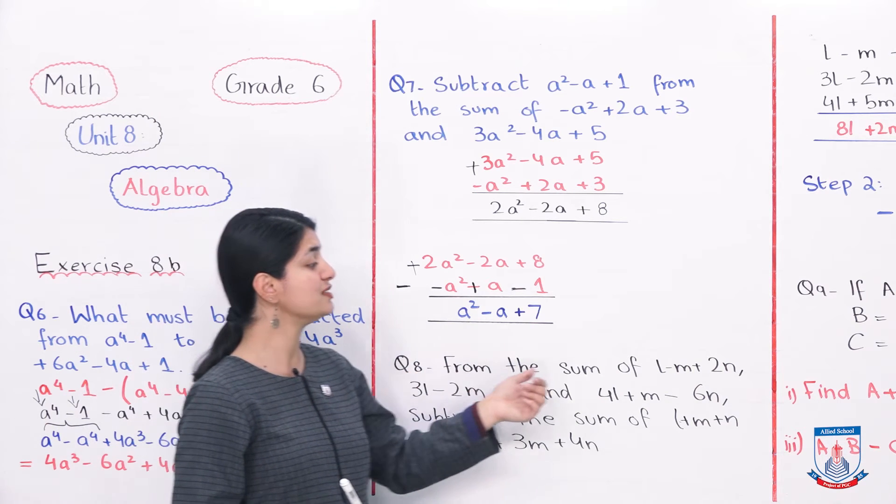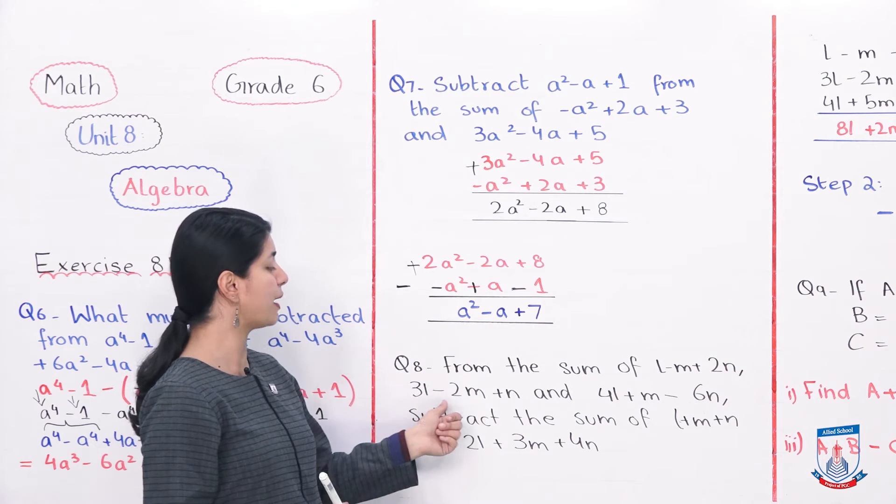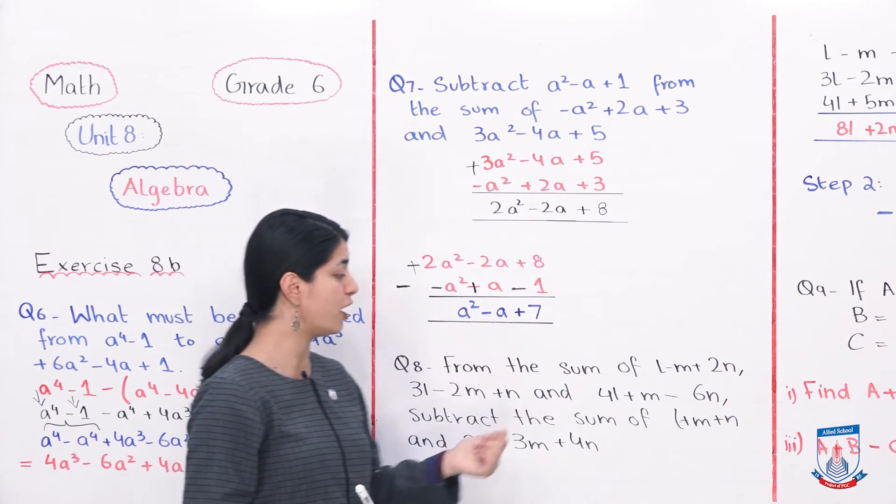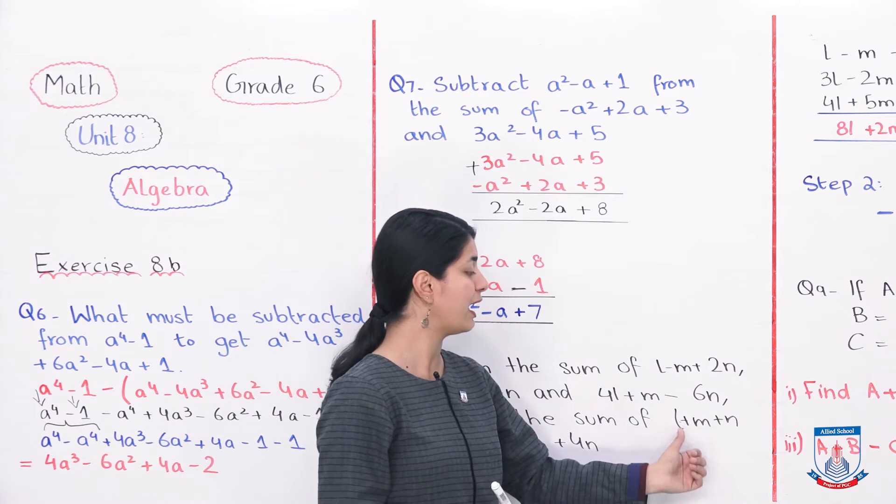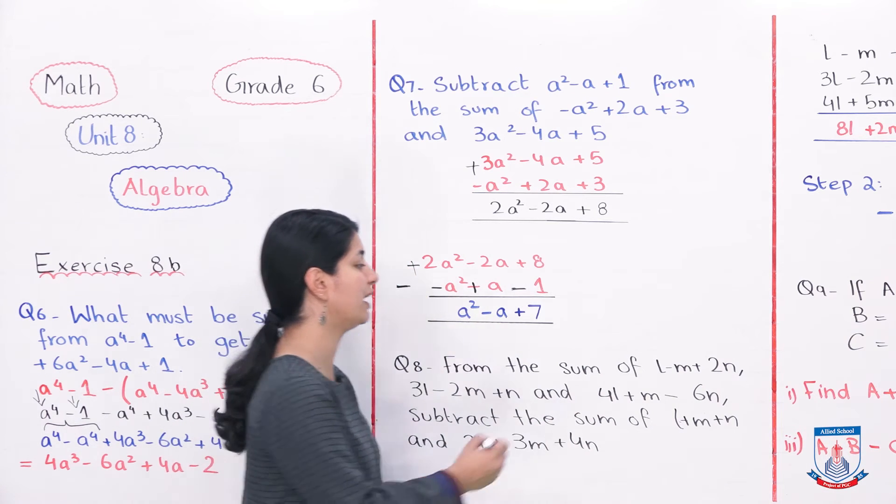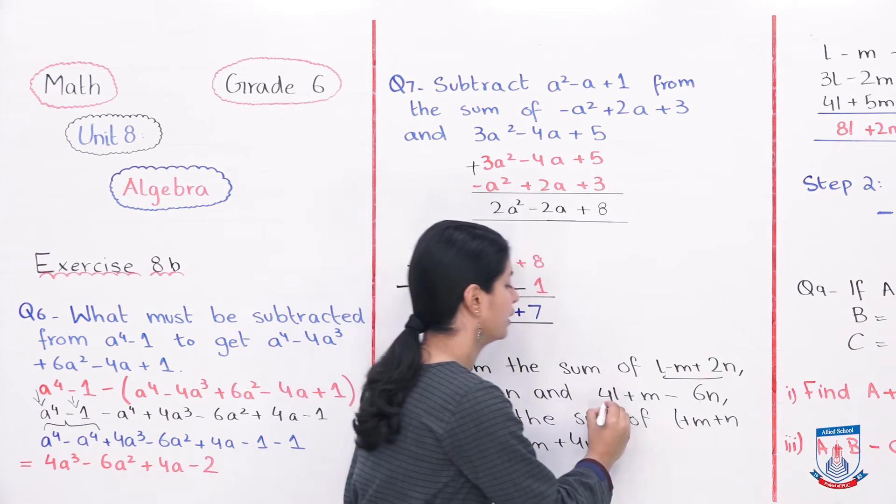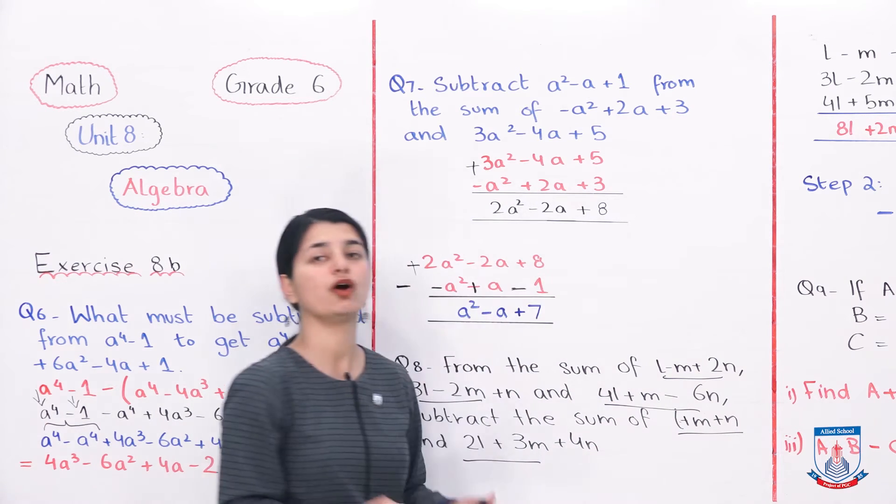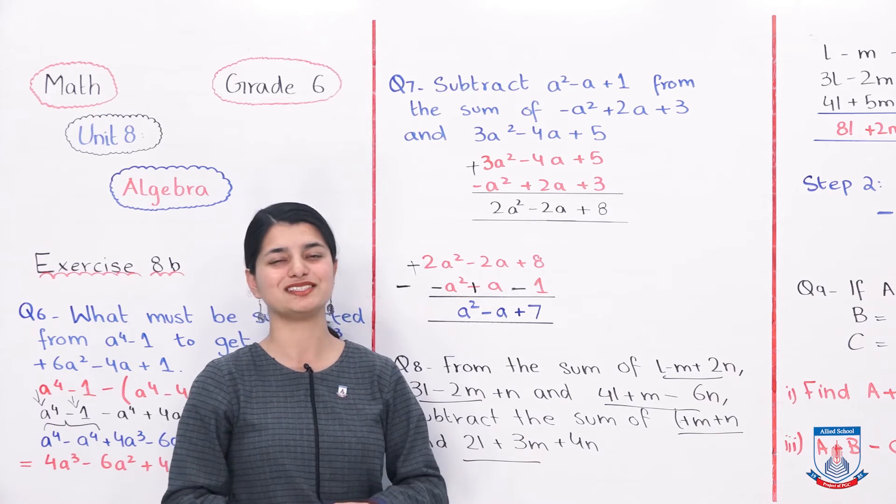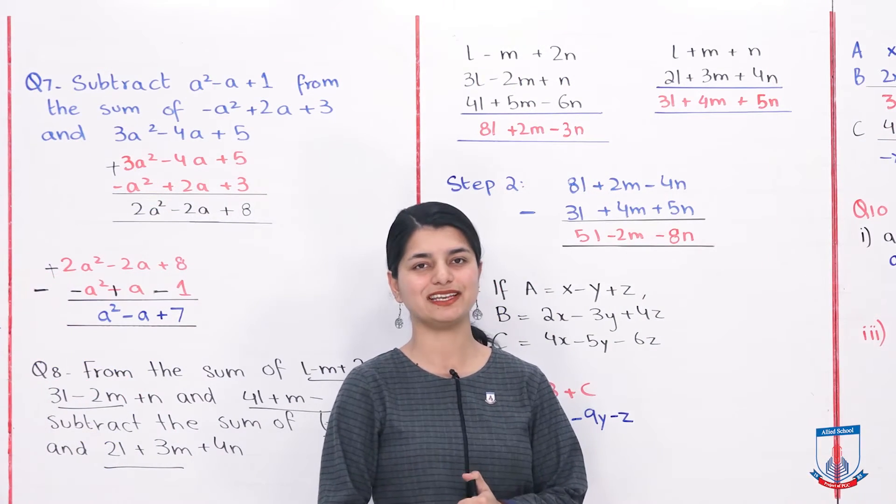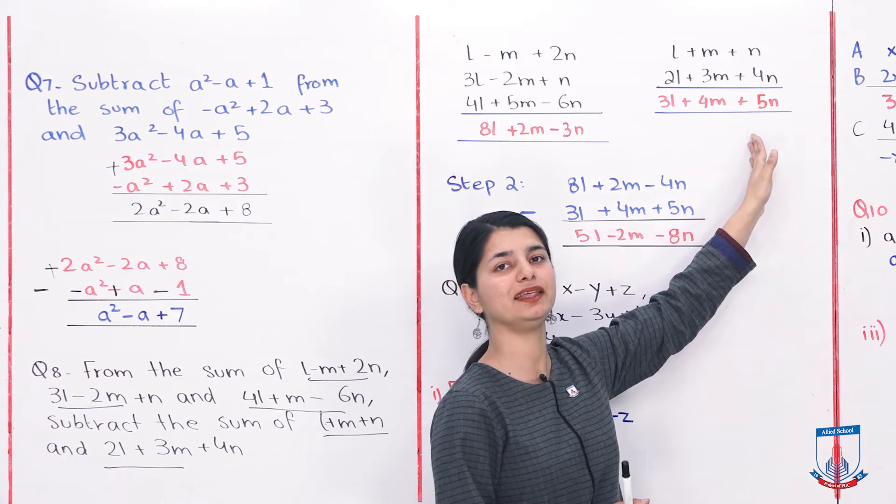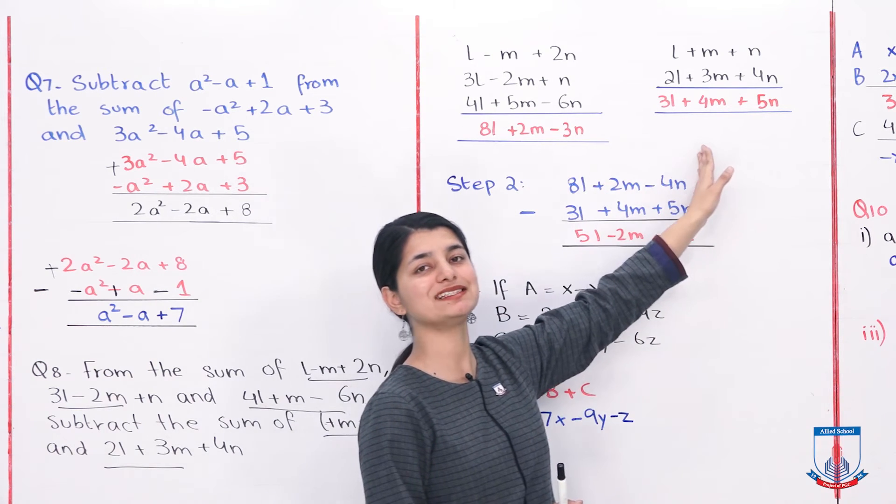From the sum of L plus M plus 2N, 3L minus 2M plus N, and 4L plus M minus 6N. These are three different expressions, their sum. From the sum, subtract the sum of L plus M plus N and 2L plus 3M plus 4N. They have told you this, that first you have to add these three expressions, then you have to add these two expressions, and you have to find the difference between these two, you have to subtract both of these. Let's go solve this together.